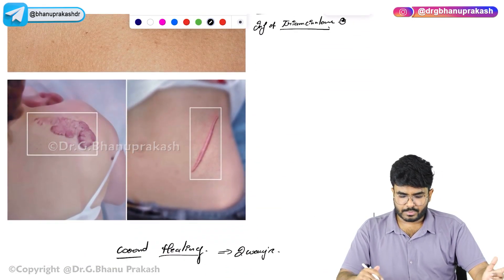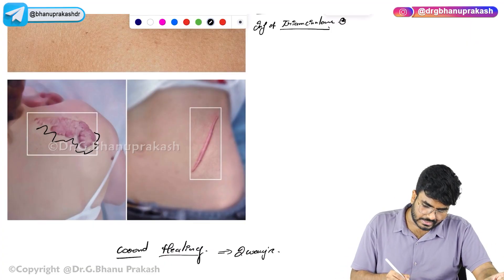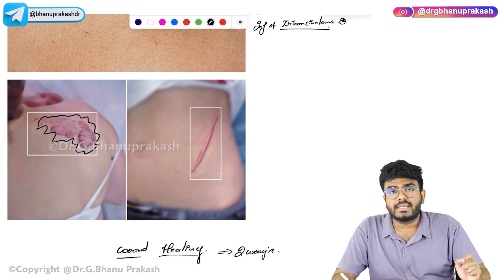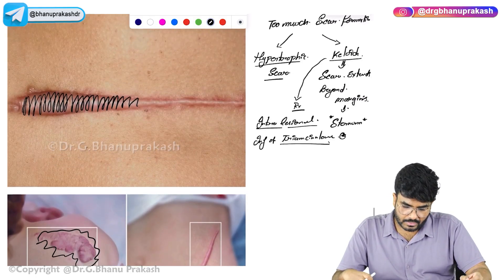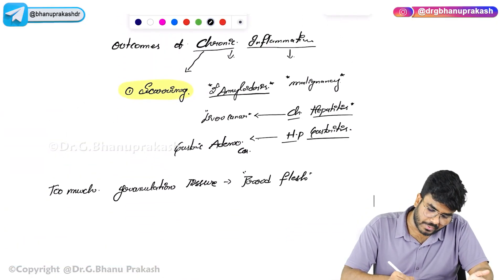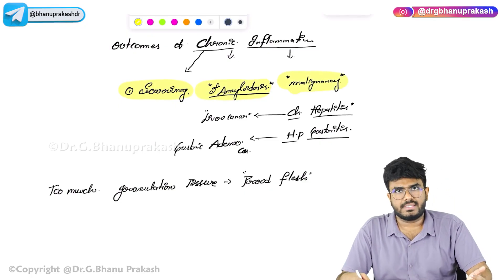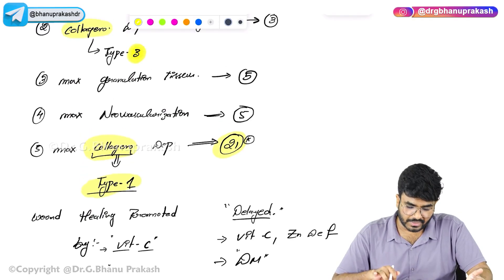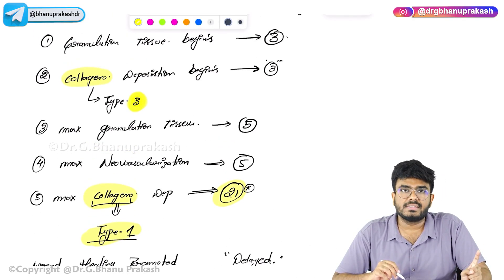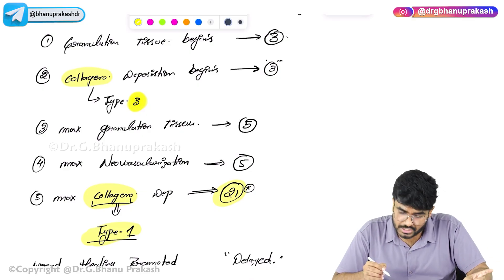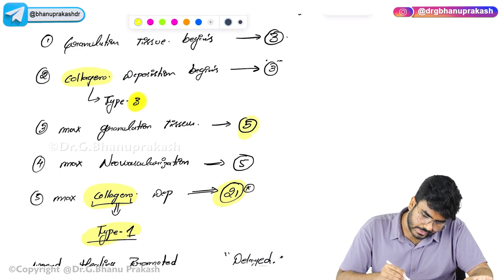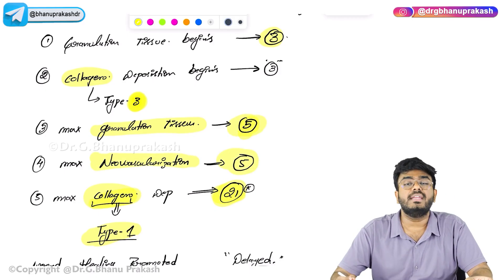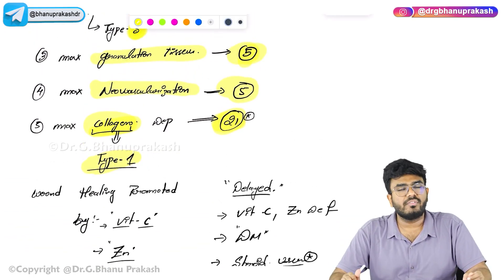To summarize the wound healing topic: hypertrophic scar and keloid — if granulation tissue grows beyond margins, that is keloid; the most common site is the sternum; treatment is intralesional injection of triamcinolone. Three outcomes of chronic inflammation: scarring, amyloidosis, and malignancy. Maximum collagen deposition is on day 21, type 1 collagen. Granulation tissue begins on day 3, maximum on day 5. Maximum neovascularization is also on day 5. With this, we have completed the topic of wound healing. Hope the video is simple. Thank you.